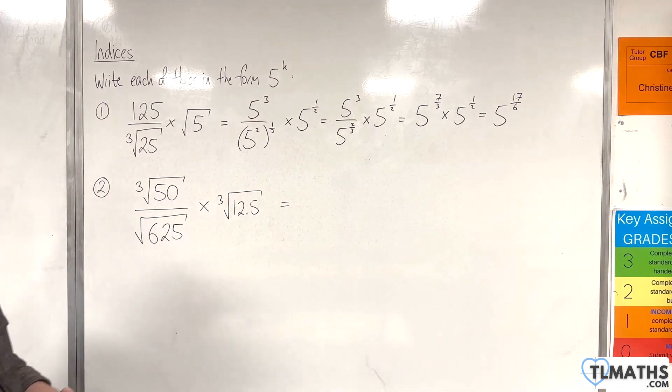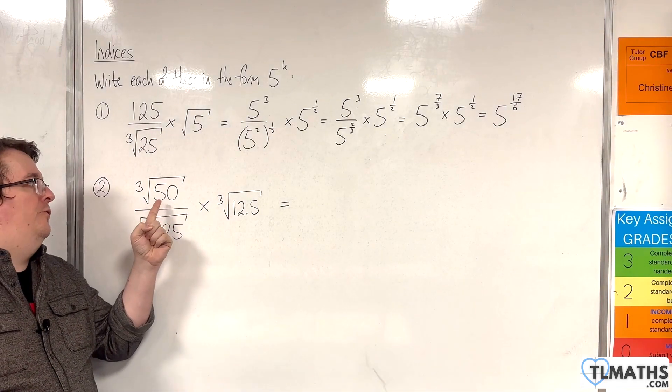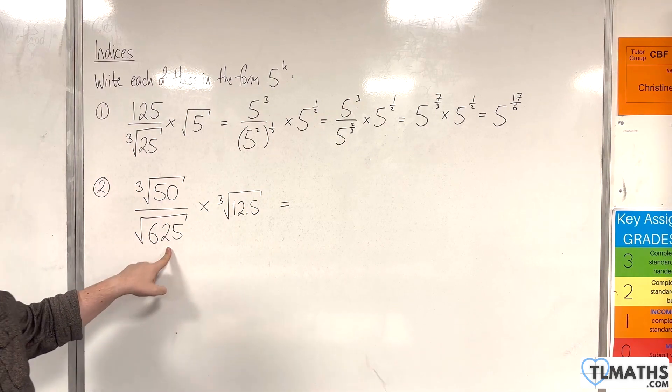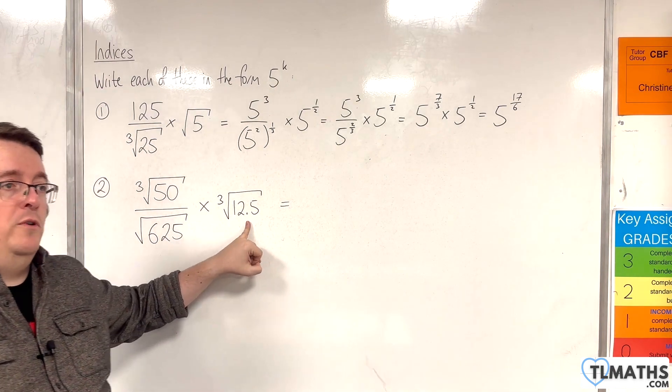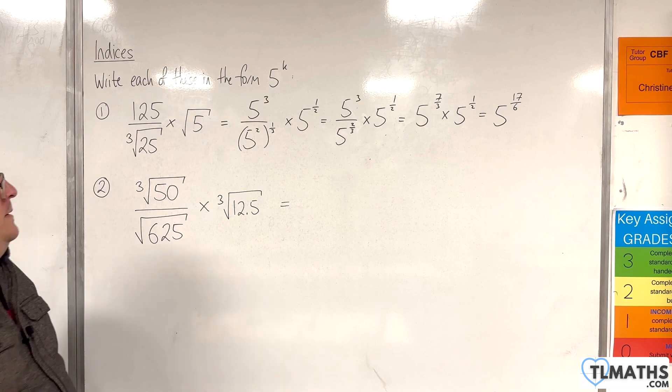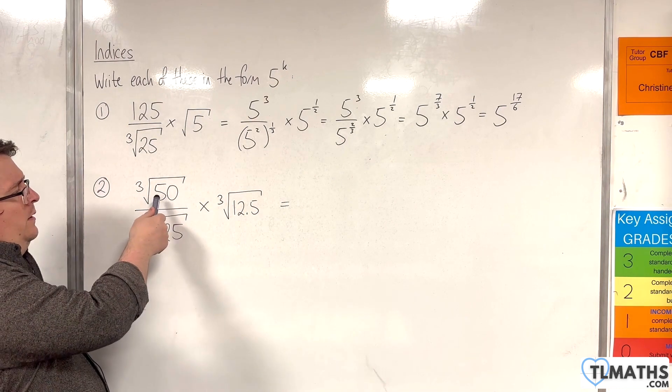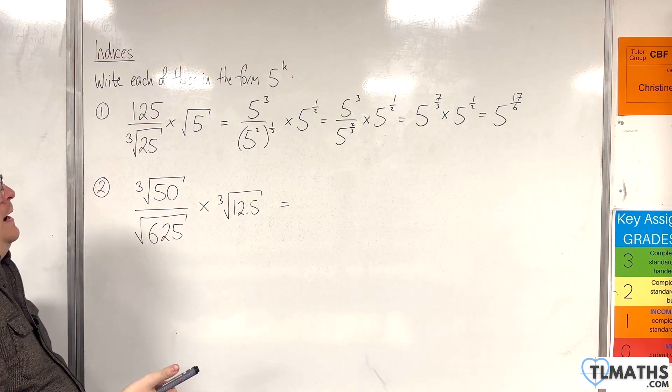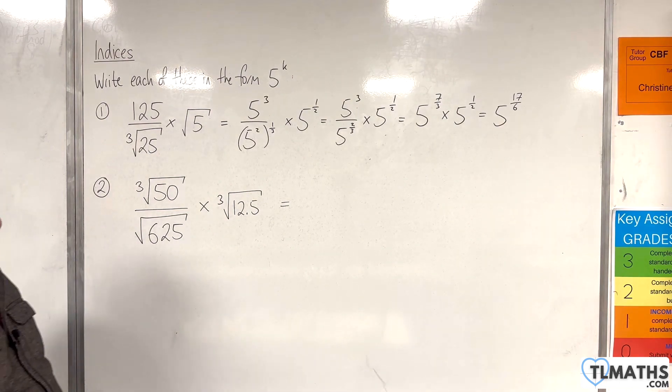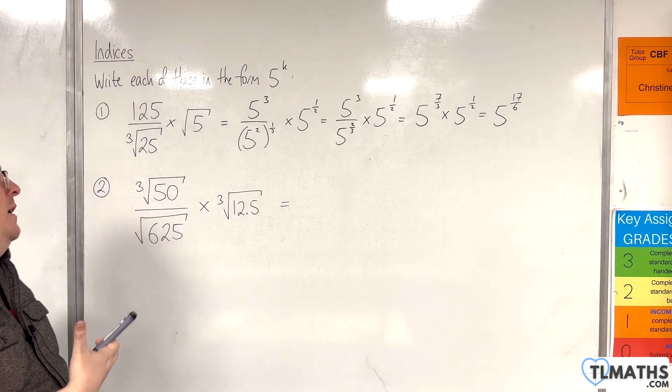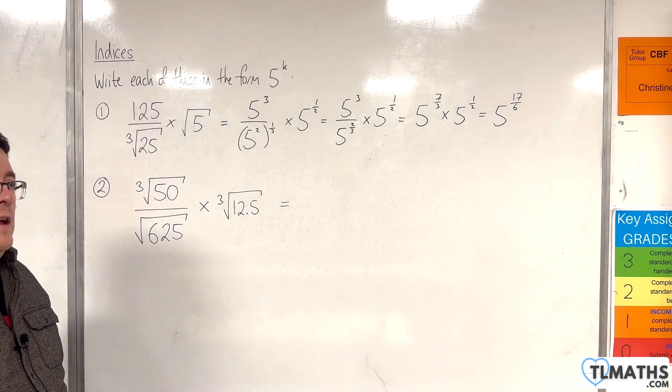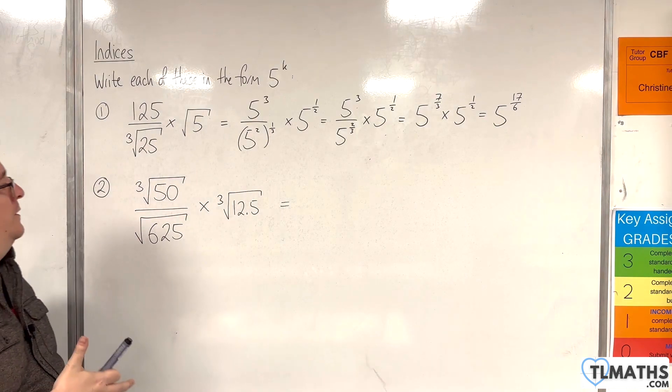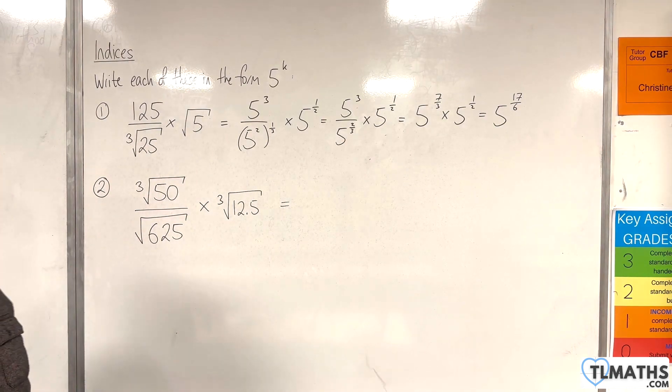Now number 2, we have cube root of 50 over the square root of 625 times by the cube root of 12.5. Now 50 can't be written as 5 to the power of something where k is going to be a fraction. I mean I could using logarithms, but I'm not going there yet. So really I don't want to go down that route.